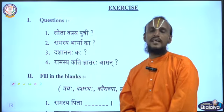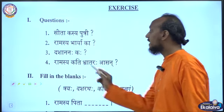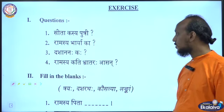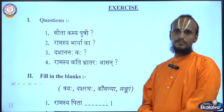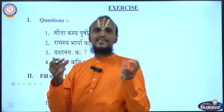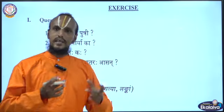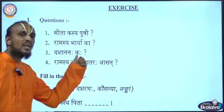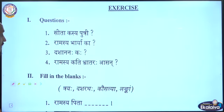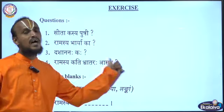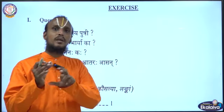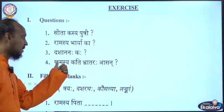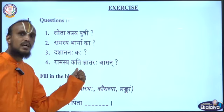Yes, Sita. So you write: Ramasya Bharia Sita. Then the next one — Dasha Nanaha Kaha — who do we call the ten-headed man? King Ravana. So you write: Dasha Nanaha Ravana. Then Ramasya Kati Bhrataraha Asana — how many brothers did Lord Rama have? Three brothers. So you write: Ramasya Trayaha Bharataraha Asana.